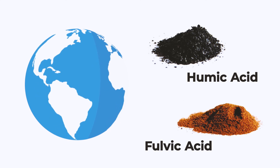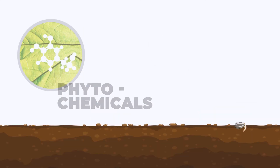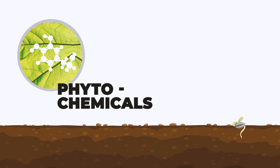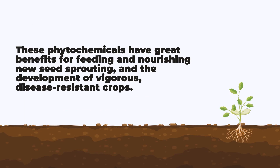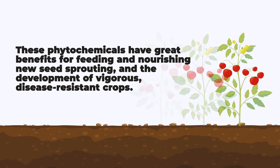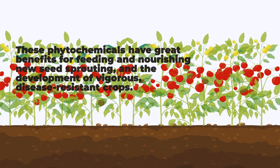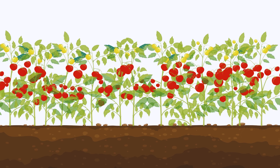Humates carry ancient plant molecules known as phytochemicals. These phytochemicals have great benefits for feeding and nourishing new seed sprouting, and the development of vigorous, disease-resistant crops.